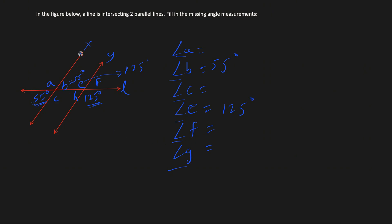Looking at line X, angles 55 and A form a supplementary angle, so angle A equals 180 minus 55, which is 125 degrees. By the vertical angle property, angle C is also 125. We can verify this another way: the other side is also supplementary, so 180 minus 55 equals 125. Then using the supplementary angle property on line Y, if this is 125 degrees, angle F equals 180 minus 125, which is 55 degrees.